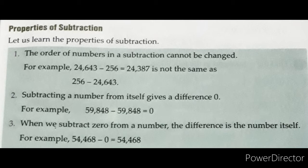Number 2. Subtracting a number from itself gives a difference of 0. For example, 59,848 − 59,848 = 0. When we subtract the same number from itself, we get a difference of 0. In this example, we subtracted the same digit from the same digit, so we got a difference of 0.